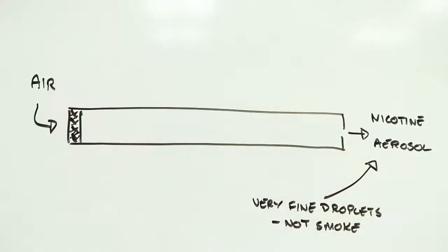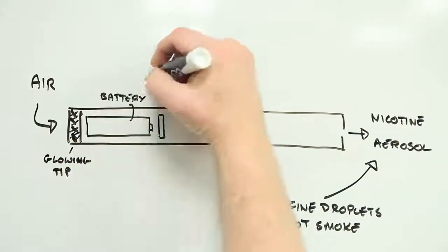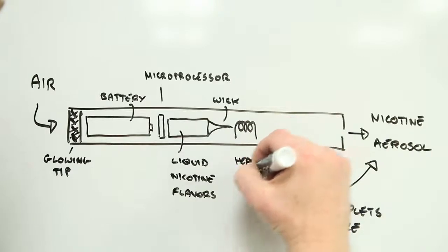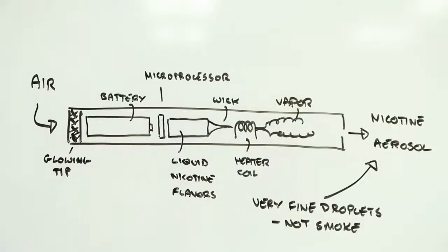E-cigarettes use a liquid such as glycerin into which ingredients like nicotine and flavorings are dissolved. When you take a puff, this liquid is vaporized in a hot wire and forms a cloud of fine particles that when inhaled penetrate deep into your lungs.